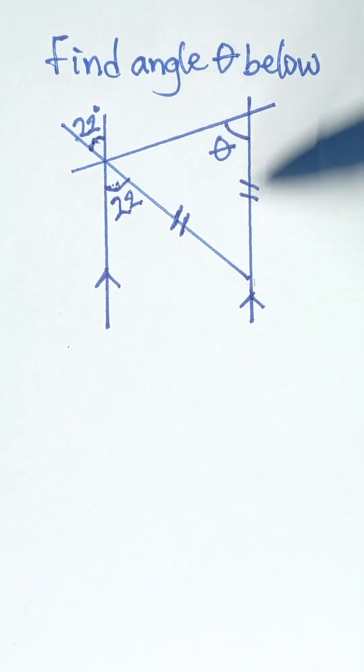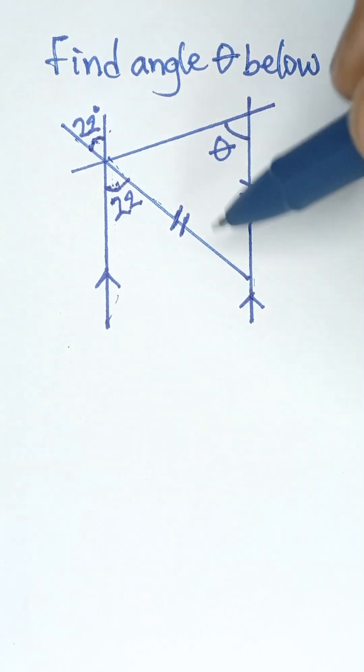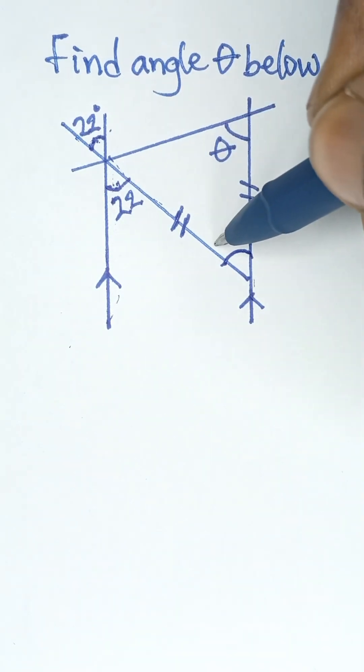Now if you also look at this, these two parallel lines - this is a parallel line and this is a parallel - so we have this Z angle here, which means that they are alternate angles. So if this is 22, this is also 22. Alternate angles are equal.